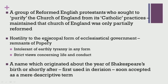The Puritans showed a lot of hostility to the episcopal form of ecclesiastical government which was in place in England with the Protestant Reformation, thinking it was a remnant of popery from the Roman Catholic Church. In that sense, they were increasingly intolerant of earthly tyranny in any form, and they also had very strict views concerning life and conduct, which made them highly unpopular during those times.